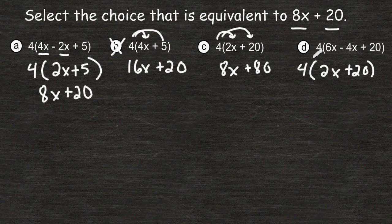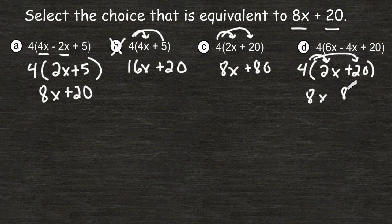Now we're going to distribute this 4 by multiplying it by 2x, which gives us 8x, and 4 times 20 is 80. So you can see that the correct choice for this problem is choice A.